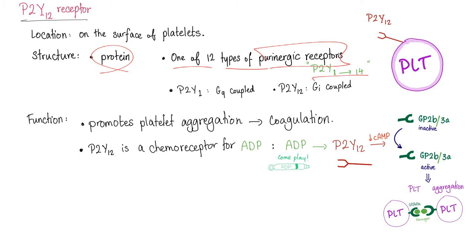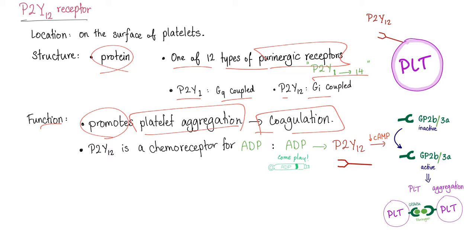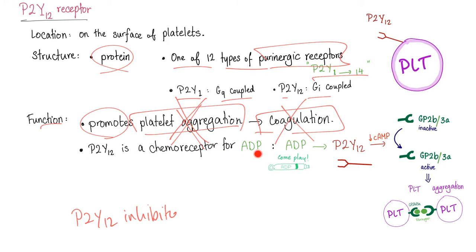P2Y12 is one of the 12 types of purinergic receptors, from 1 to 14. P2Y1 is GQ-coupled; P2Y12 is GI-coupled. What's the function? P2Y12 promotes platelet aggregation, and if you have platelet aggregation, you have a great path towards blood coagulation. P2Y12 is a chemoreceptor for ADP — ADP binds to the P2Y12 receptor on the platelet.